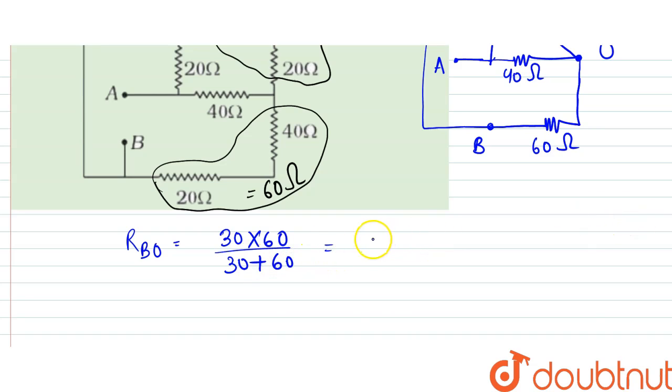So they would be equal to 30 into 60 divided by 90. So this is 3, so this will be 20 ohms.